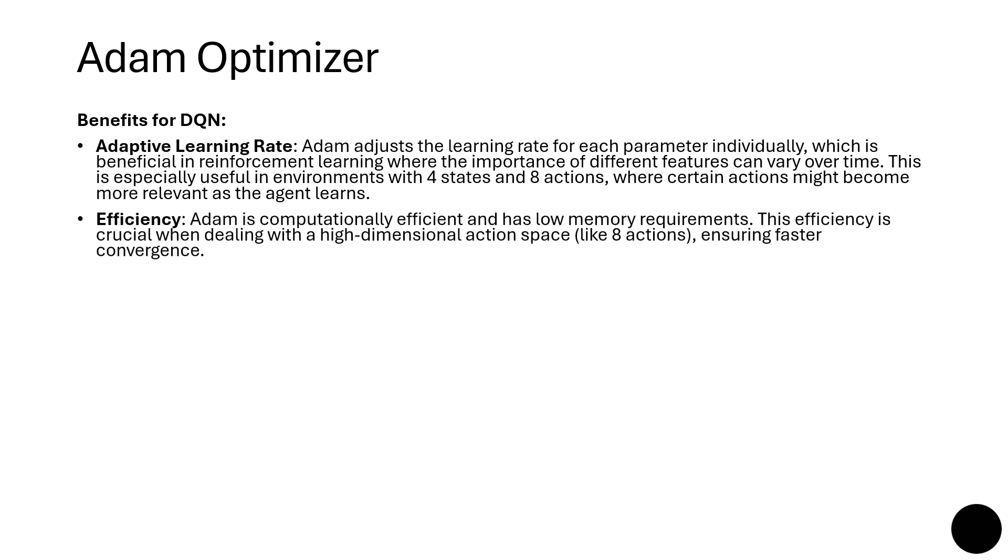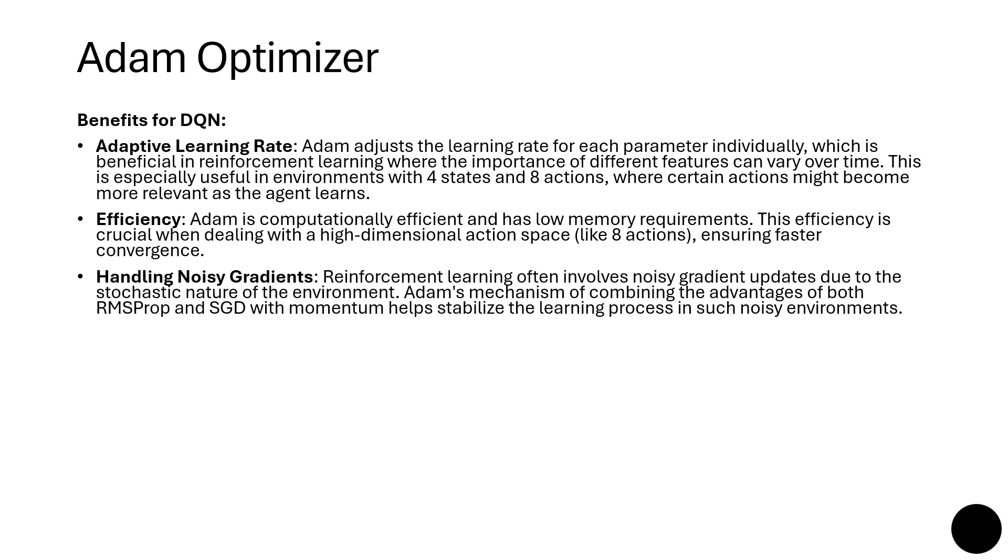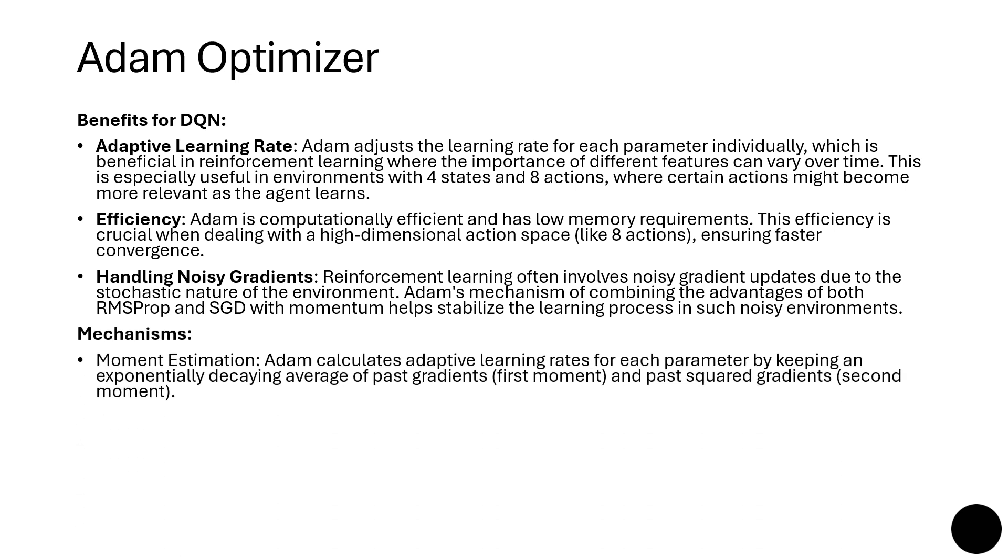Computationally efficient, low memory requirements are crucial when dealing with high-dimensional actions like eight, ensuring faster convergence. Handling noisy gradients: often reinforcement learning involves noisy gradient updates due to the stochastic nature of the environment. Adam's mechanisms combining the advantages of both RMSprop and SGD with momentum help stabilize the learning process in such noisy environments. The mechanism is moment estimation. It calculates the adaptive learning rate for each of the parameters by keeping an exponentially decaying average of past gradients (first moment) and the past squared gradients (second moment). The bias correction is included to counteract the initial moments, providing accurate estimates during the initial stage.